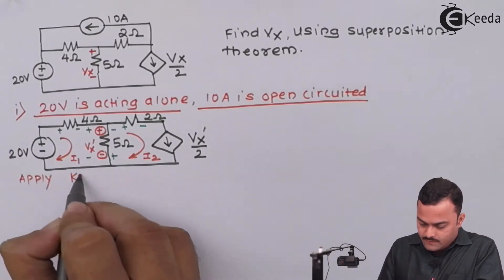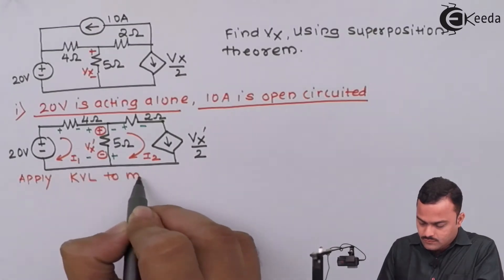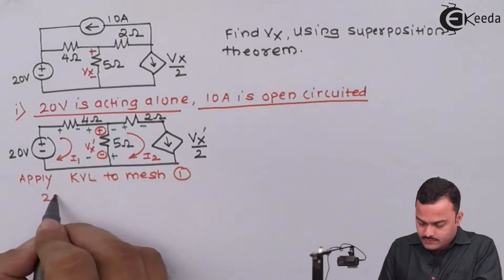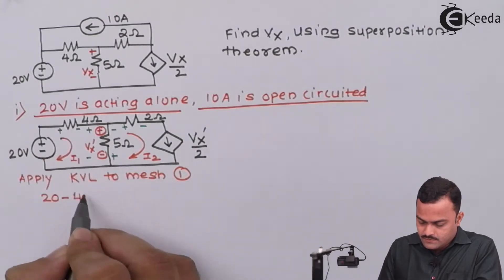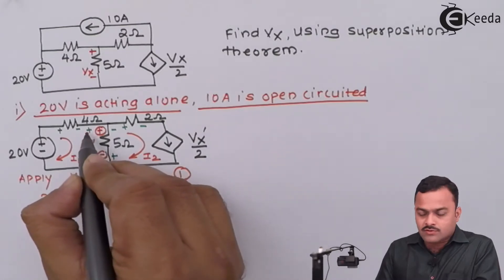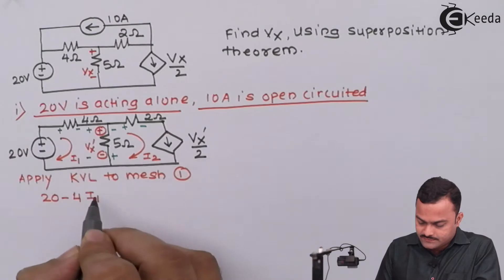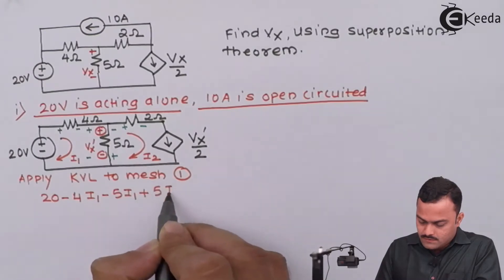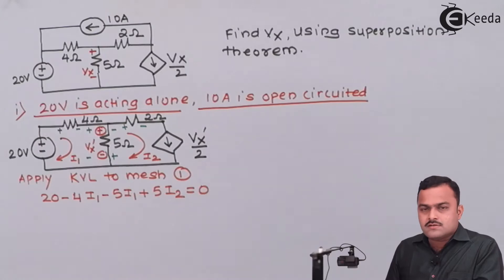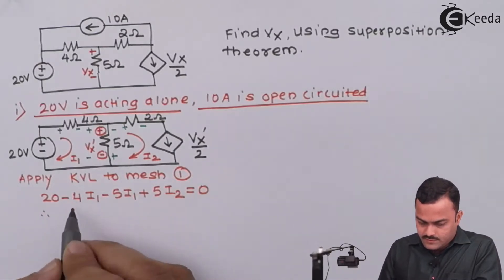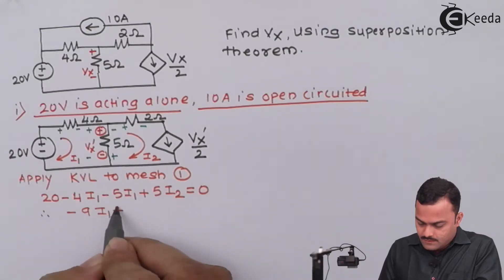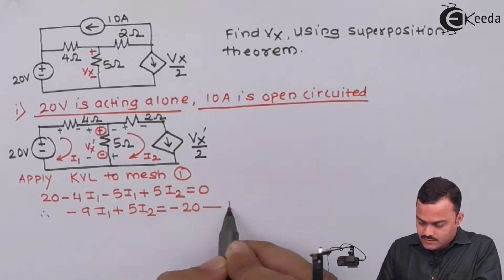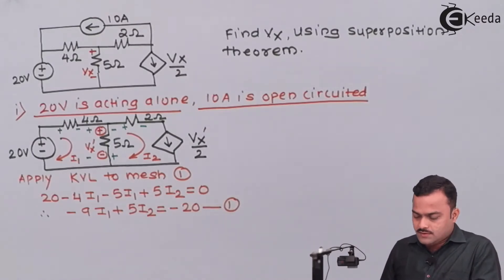Applying KVL to mesh 1: starting with the voltage source — minus 20, then minus 4·I1, minus 5·I1, plus 5·I2, equal to 0. Upon simplifying, we get equation 1: minus 9·I1 plus 5·I2 equals minus 20.